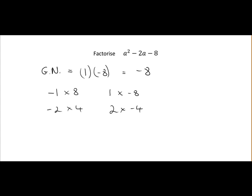Next, we have to pick out the set of factors which add up to give the middle number, so the number beside the a, which in this case is minus 2. So what factors here add up to give us minus 2? If we analyze them, we can see 2 and minus 4. So minus 4 plus 2 is minus 2.